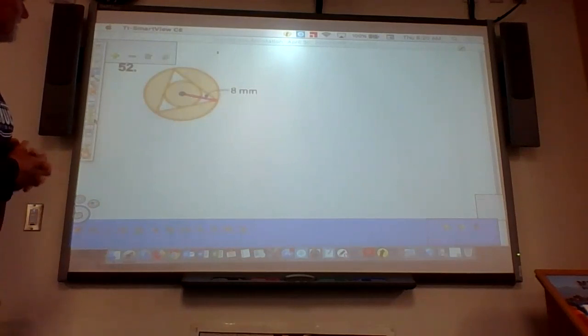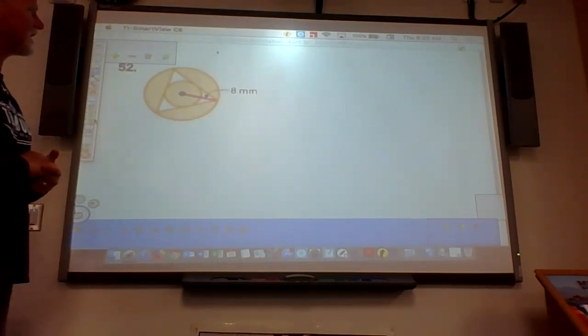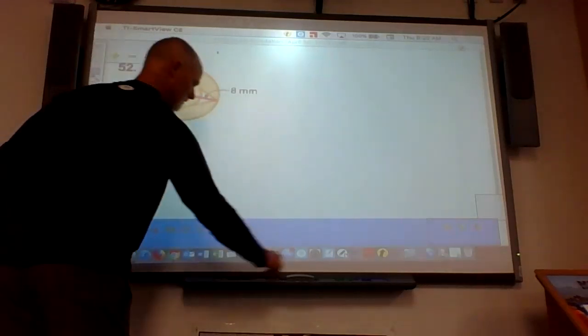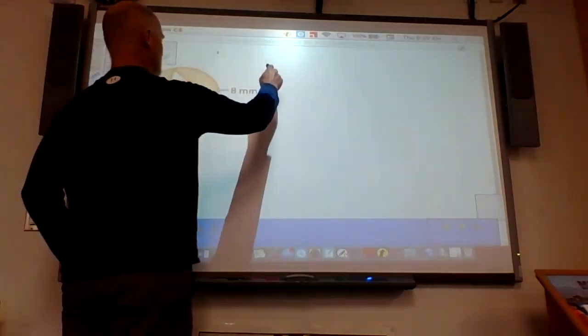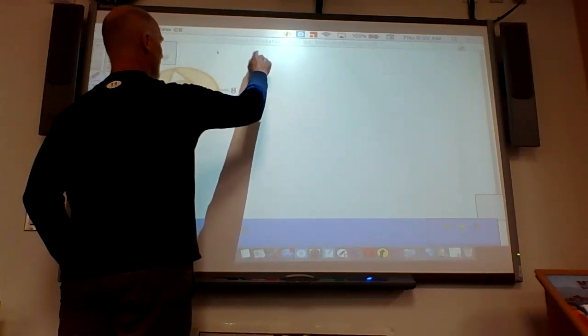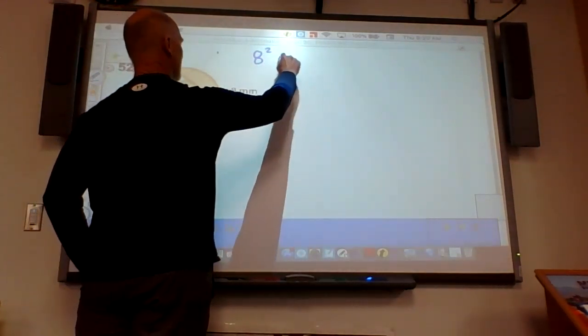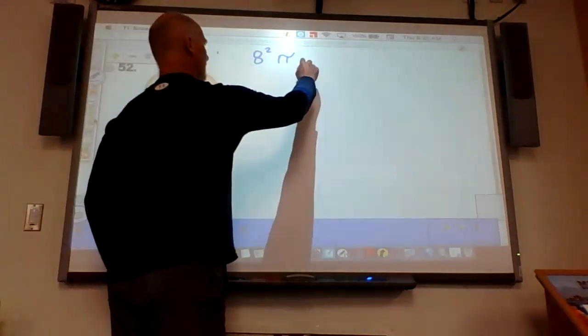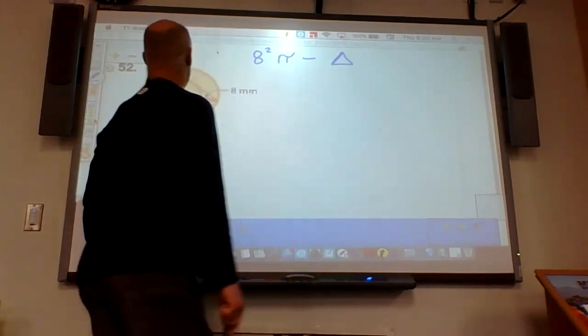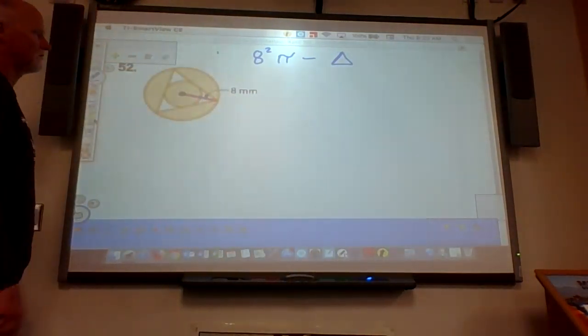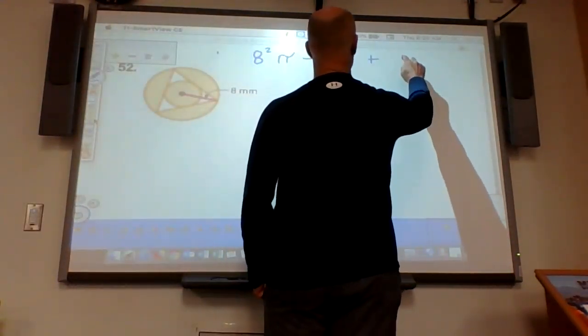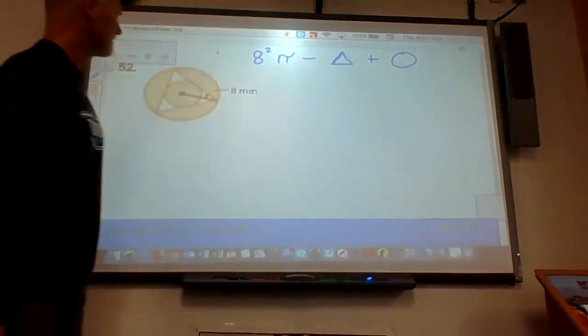So we have this figure, and it wants to know the area of the shaded region. So the shaded region is the big circle, and the big circle is going to be equal to 8 squared pi. So that's the big circle. Now I'm going to subtract from it the triangle. Now that triangle is going to be an equilateral triangle, and we'll talk about that in a minute. And then we need to add to it the circle, the smaller circle. So we're going to need the radius for that.